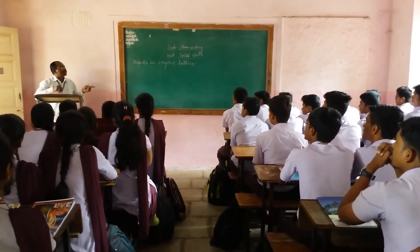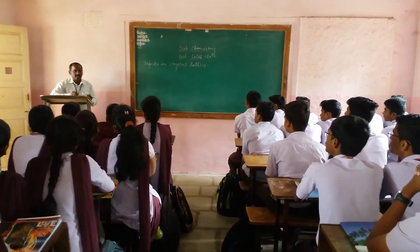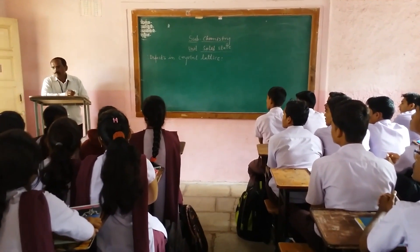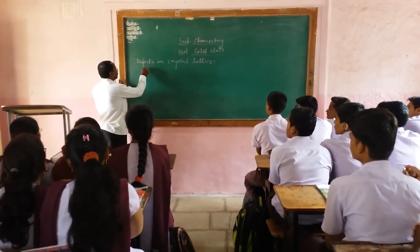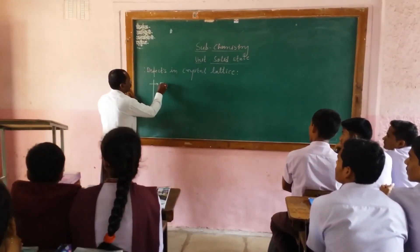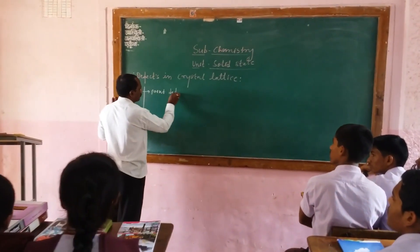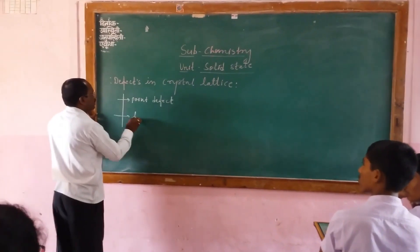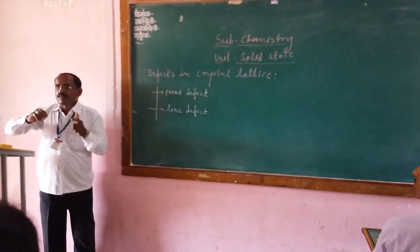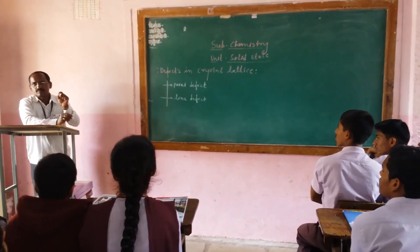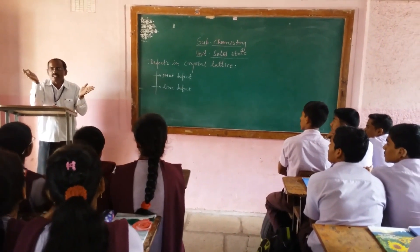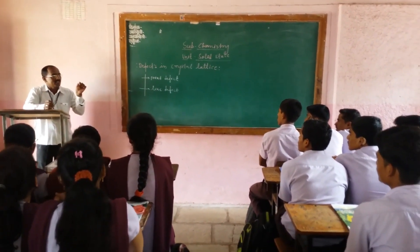Those defects are studied in today's lecture. According to the development of crystal structure, we observe two major types of defects. First one is the point defect, and second one is the line defect. These types depend on the arrangement of points as well as lines in the structure of that crystal lattice.